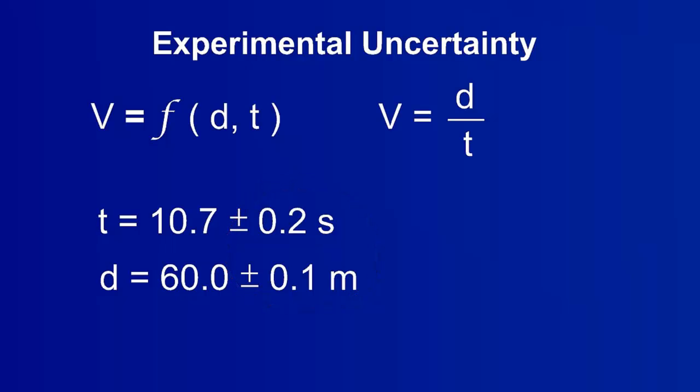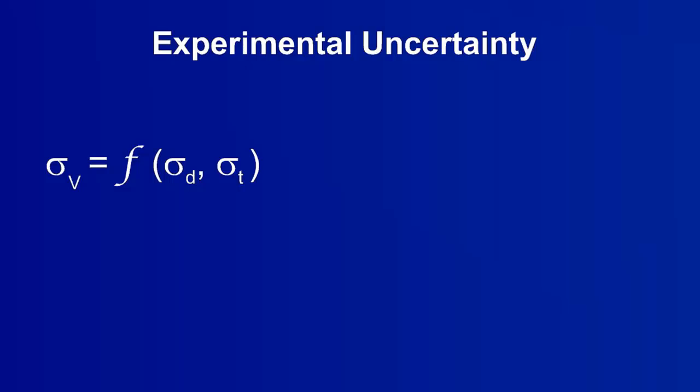All experimental measurements have uncertainty, though it is not always shown. The velocity, calculated from these measurements, will also have an amount of uncertainty. The uncertainty of a resultant is a function of the uncertainties of all the measurements used to calculate it.